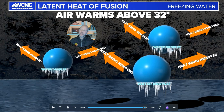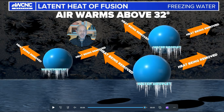Unless, in big freezing rain events or ice storms, we have a constant supply of cold air to replenish and keep things cold. This is why freezing rain is a self-limiting process.